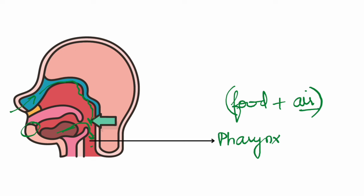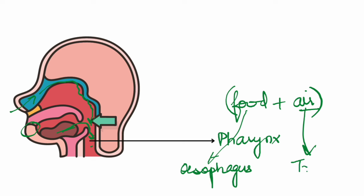Before the pharynx, air and food are separated — air comes through the nostrils, food comes through the mouth. After the pharynx they again go their separate ways: food goes forward into the esophagus as we saw in the digestive system, and air goes into the tube we call the trachea. So the pharynx is the common passage for food and air — many competition questions come from this point.